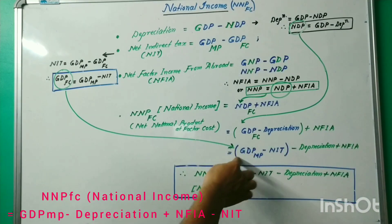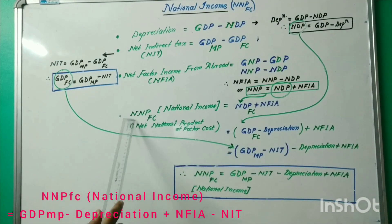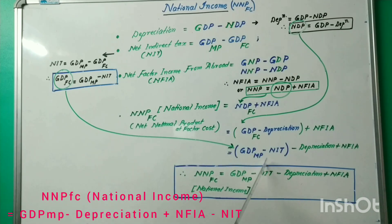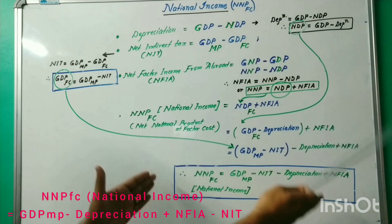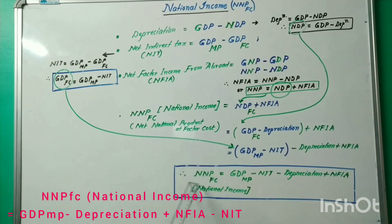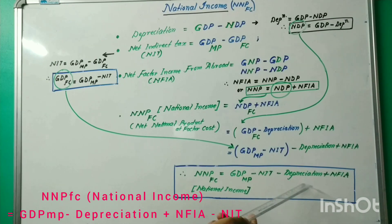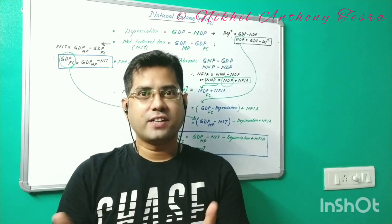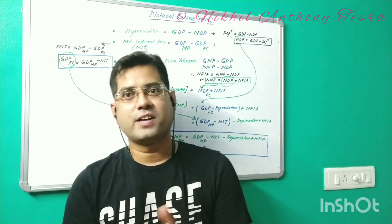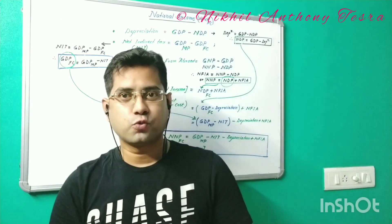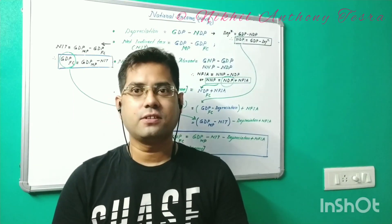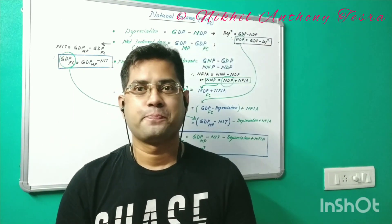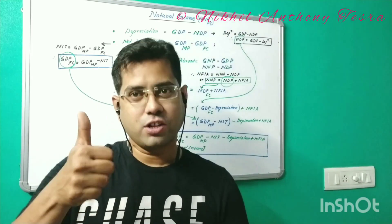So we get the final formula: NNPFC equals GDPMP minus NIT minus depreciation plus NFI. This is all about today's video. Hope you guys liked it. If you find this worthwhile and helpful, do share with your friends. Take care, bye-bye, and all the best.